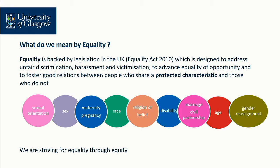What do we mean by equality? In the UK, equality is backed by legislation under the Equality Act of 2010. This means it's unlawful to discriminate against a number of protected characteristics. There are nine protected characteristics: sexual orientation, sex, maternity and pregnancy, race, religion or belief, disability, marriage and civil partnership, age, and gender reassignment. The Equality Act is protecting individuals that identify with those characteristics and ensuring there's opportunity for fostering good relations between different groups of individuals.